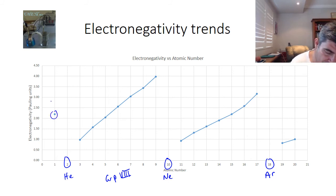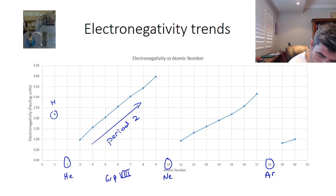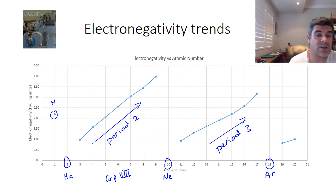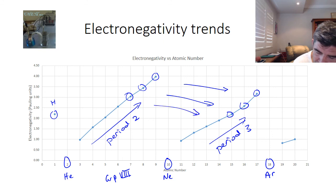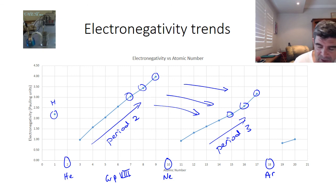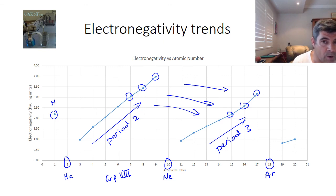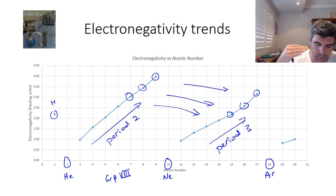Leaving hydrogen out on its own, as we go across the period — across period 2, and then across period 3 — we see a rise in electronegativity trends. This is a very significant trend. The other thing to look at is where these peaks are and what is happening in terms of these roughly parallel lines. What you'll notice is that we pick out each of the elements that are in the same group. Whilst the pattern is consistent, you can actually see a drop in each case, so that the period 3 elements, even the ones in the same group, have a lower electronegativity value than the members higher up the group in lower periods.